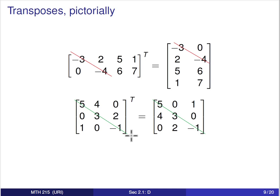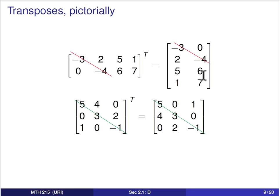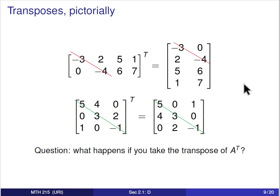With a square matrix it's even easier to see: entries across from each other on either side of the main diagonal simply trade places. So the 0 and 4 trade, the 1 and 0 trade, and the 0 and 2 trade, while entries on the main diagonal stay in their same positions. We have several ways of thinking about the transpose, and we'll see later why it's a useful operation.